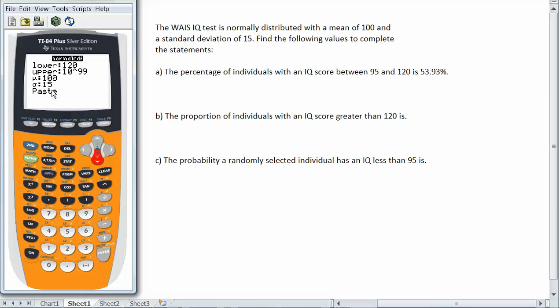Then I go down and paste. This will put it in the command screen. If I hit enter, it will give me my result. So the proportion of individuals with an IQ score greater than 120 is 0.0912.